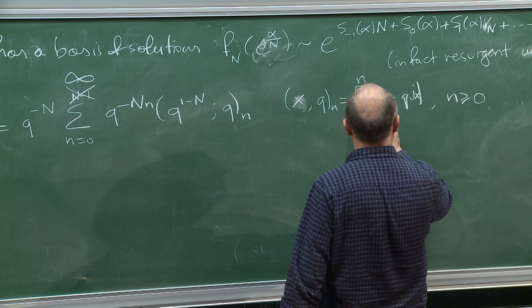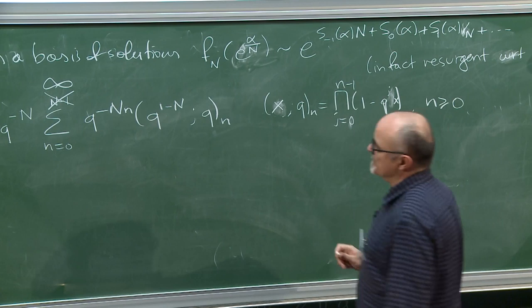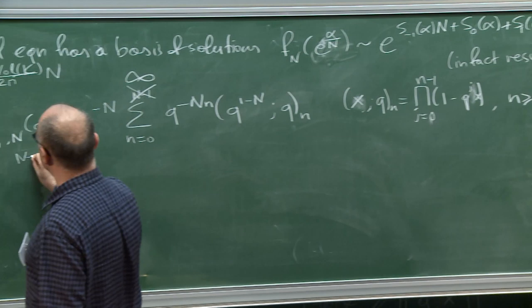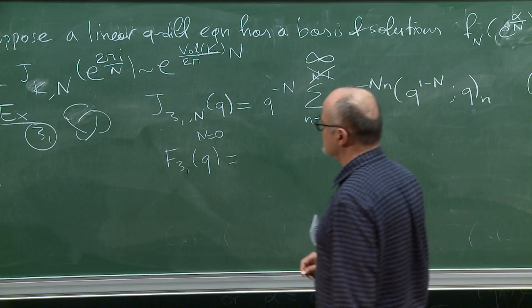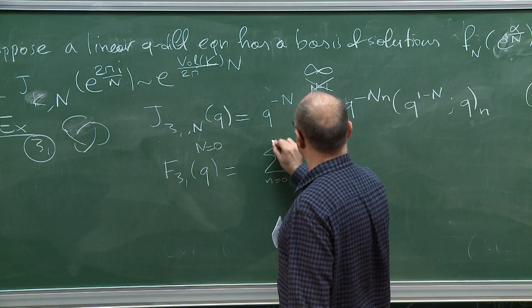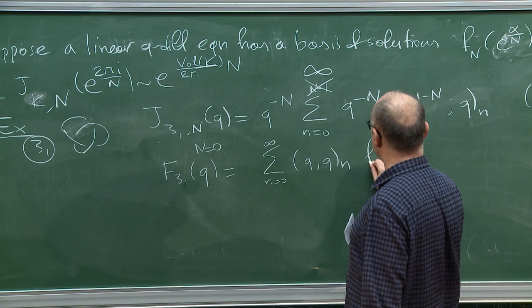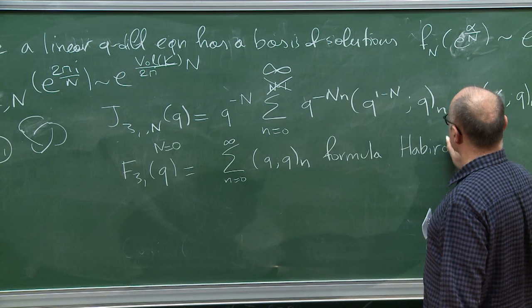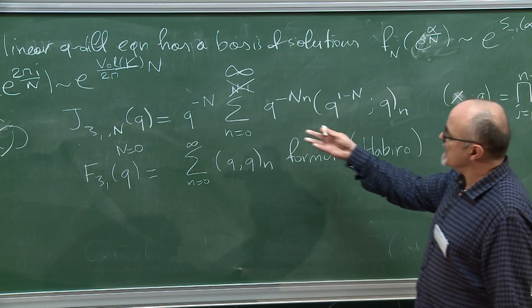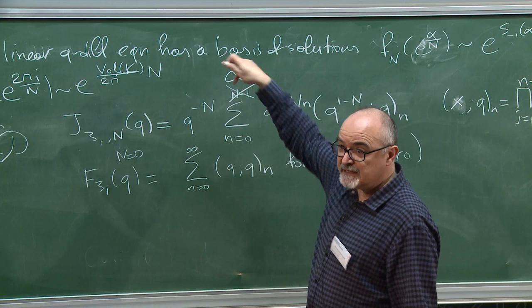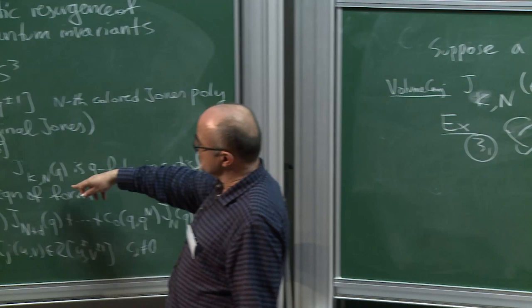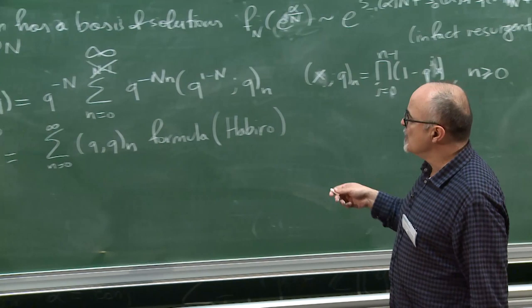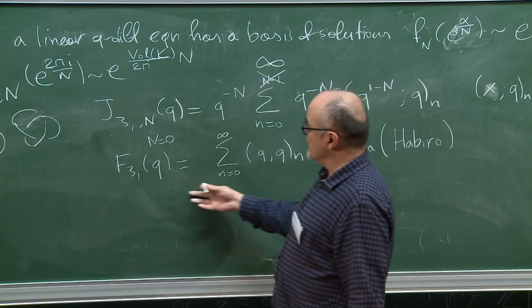Let's set n=0 and call the resulting formula what it is — a knot invariant. The fact that it is a knot invariant is a theorem due to Habiro. This formula, which looks like black magic, has two properties: first, it can be evaluated at roots of unity because only finitely many terms contribute; and second, it can also be evaluated when q = e^{h̄}.